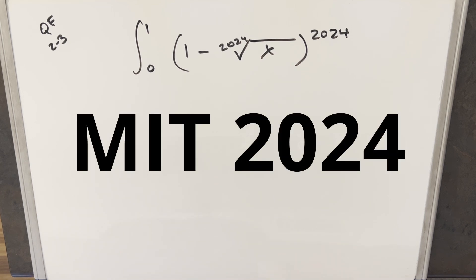Okay, we have another integral from the MIT Integration Bee 2024. This is from quarterfinals round 2 number 3. You have the integral from 0 to 1 of 1 minus the 2024th root of x to the 2024 dx.